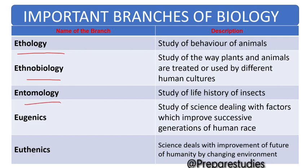Entomology: study of life history of insects. Eugenics: study of science dealing with factors which improve successive generations of the human race. Euthenics: science dealing with improvement of future humanity by changing the environment.